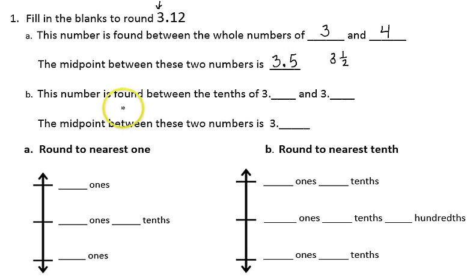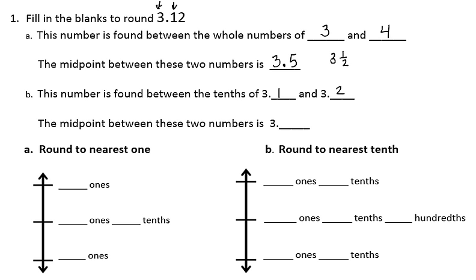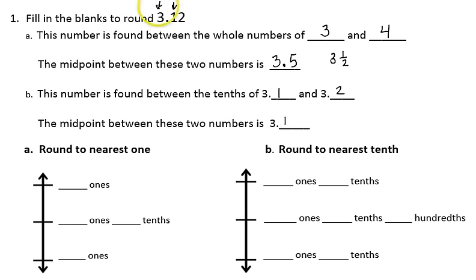Now the same number, 3 and 12 hundredths, is found between the tenths. Let's look at what digit is in the tenths place — I have 1 tenth. So my number falls between 3 and 1 tenths and 3 and 2 tenths, since that would be the next tenth. The midpoint between 3 and 1 tenths and 3 and 2 tenths would be 3 and 1 tenths and 5 hundredths.